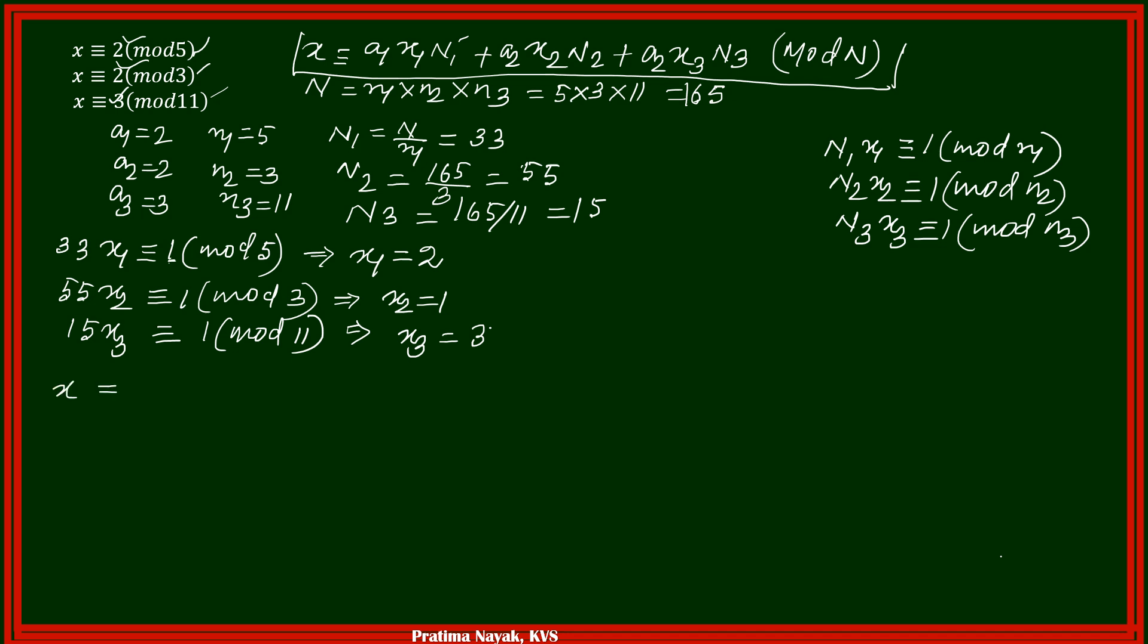So x is congruent to now A1, A1 is 2. Then your x1, x1 equal to 2 and capital N1 is 33, so I multiply 33, x1 plus A2 x2 N2, A2 is 2, x2 is 1 and N2 is equal to 55. Next is A3, A3 is 3, x3 is 3 again and N3 is equal to 15.